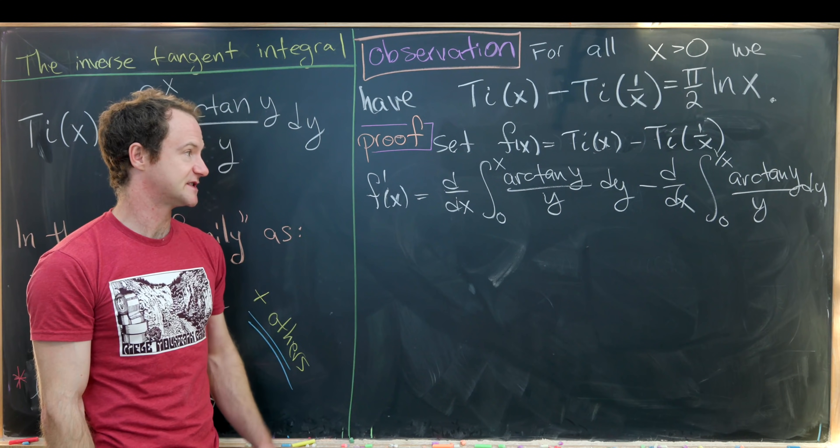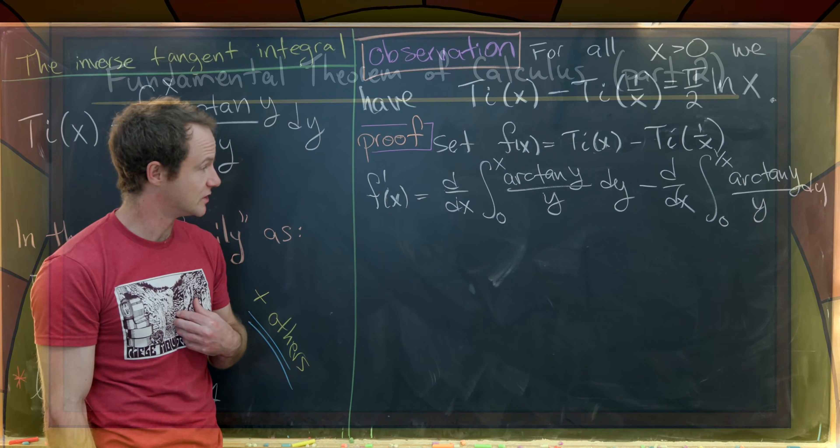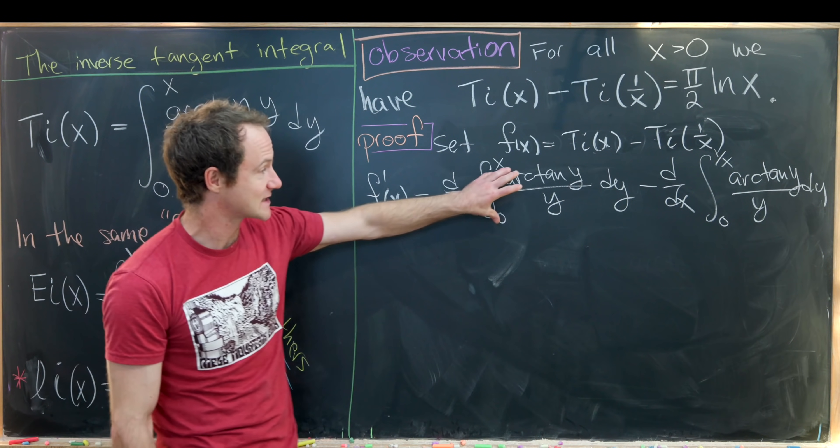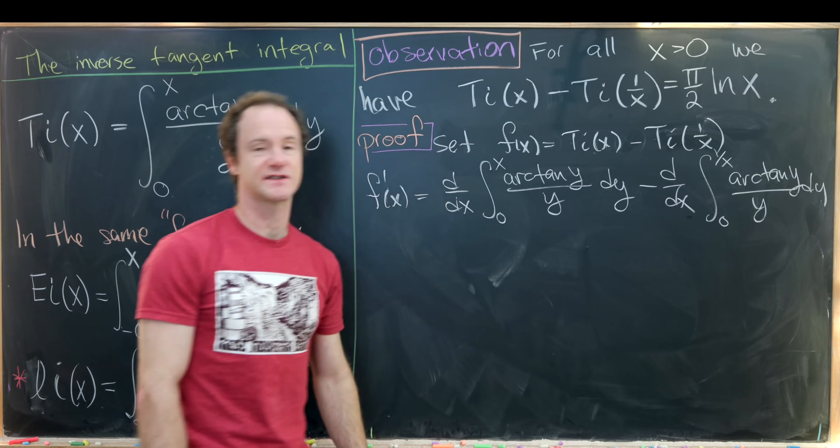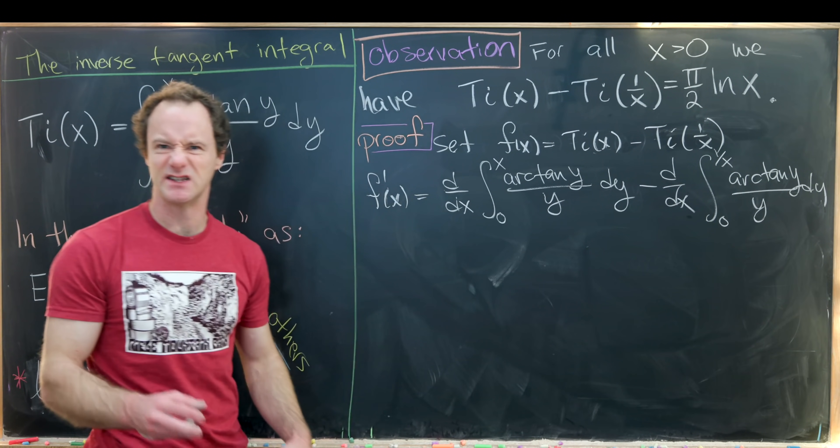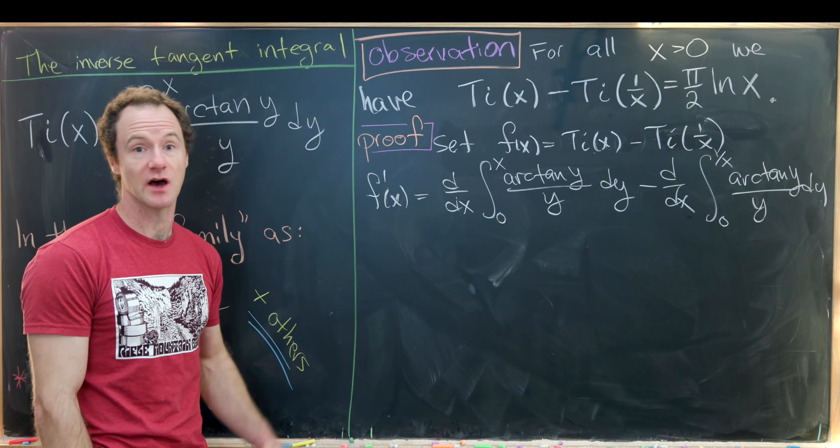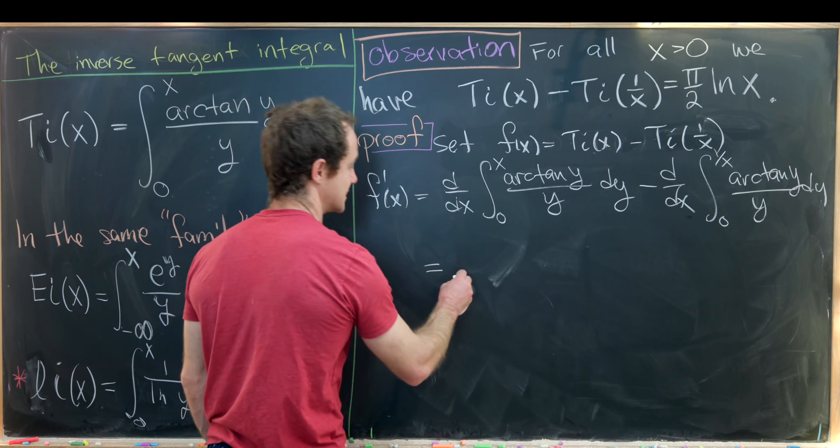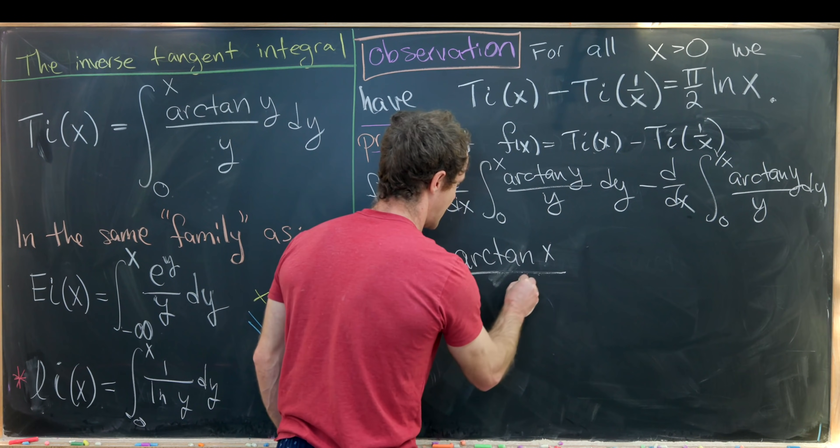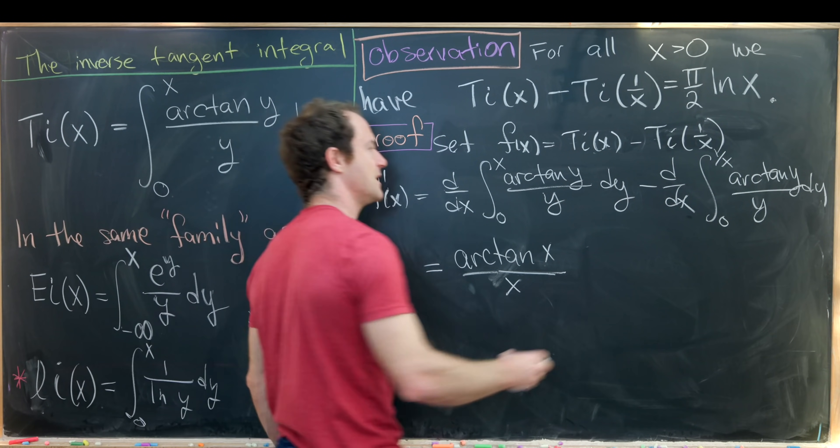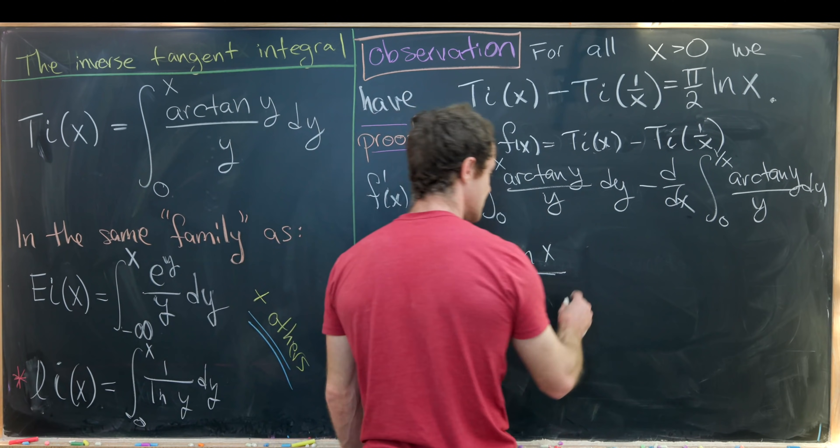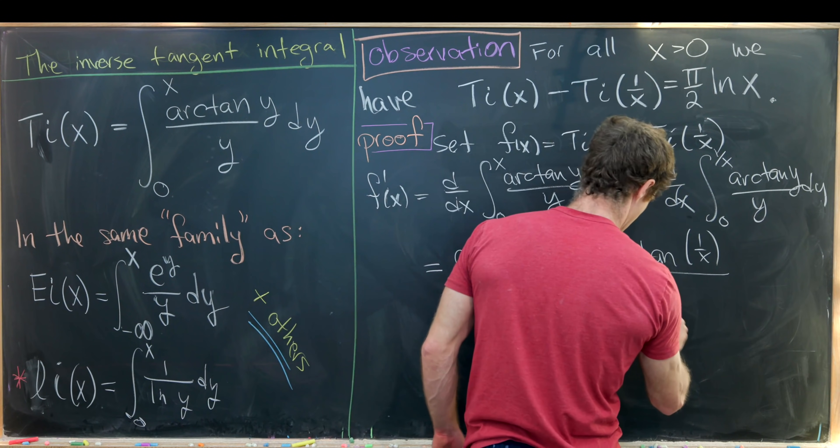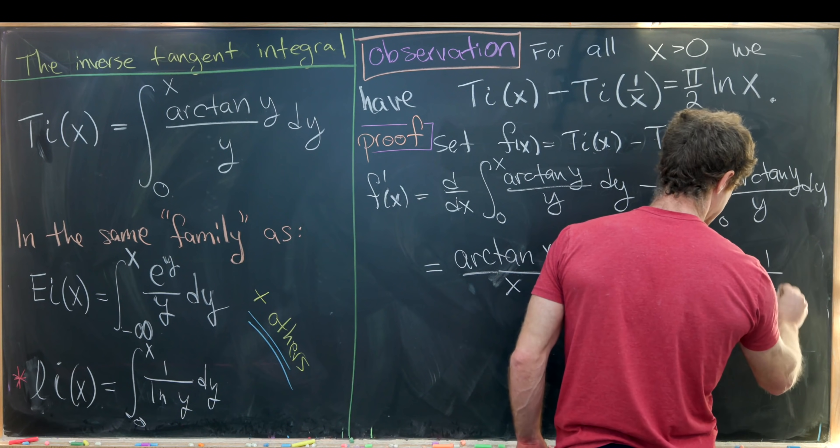Now taking each of these derivatives is fairly simple because we can use the fundamental theorem of calculus part 2. So we have that set up exactly for our first integral and almost exactly for our second integral. It's just we're composing 1 over x into what would look like a standard application of fundamental theorem of calculus part 2. Okay, so let's take these derivatives. So here the derivative and the antiderivative cancel each other and we're left with arctan of x over x. And here they cancel each other but then you pick up a derivative of the inside function, this 1 over x, so that's going to give us minus arctan of 1 over x over 1 over x times the derivative of 1 over x which is minus 1 over x squared.